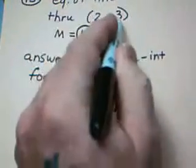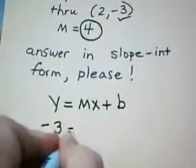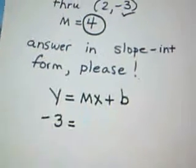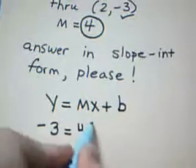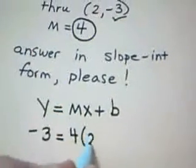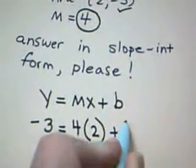Temporarily replace y with negative 3. We know that m is given to be 4. Temporarily replace x with 2, and we don't know b.